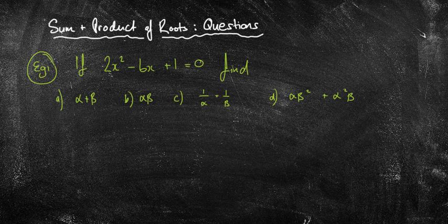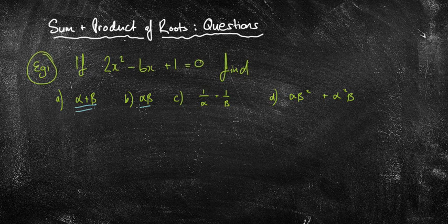The first example we're going to look at is: if 2x squared minus 6x plus 1 equals 0, find alpha plus beta, alpha beta, 1 over alpha plus 1 over beta, and alpha beta squared plus alpha squared beta. This is a similar type of question to what we looked at from the last lesson.